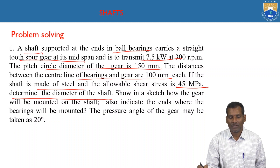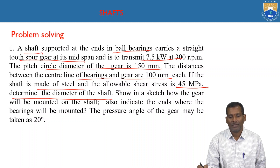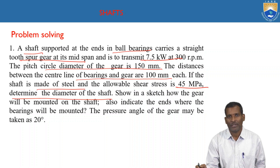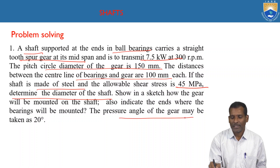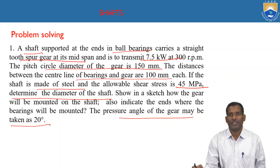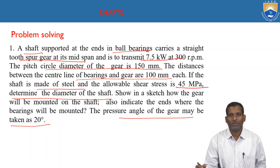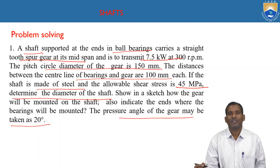In a sketch, we indicate how the gear will be mounted on the shaft and where the bearings will be mounted. The pressure angle of the gear may be taken as 20 degrees. We have to find out the diameter of the shaft using strength basis conditions.